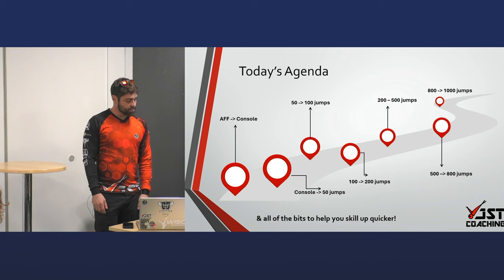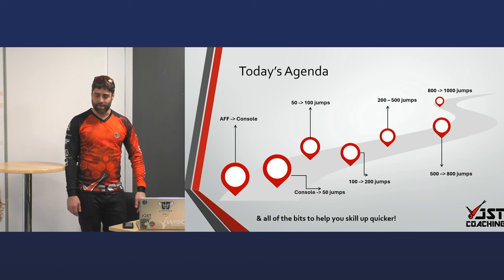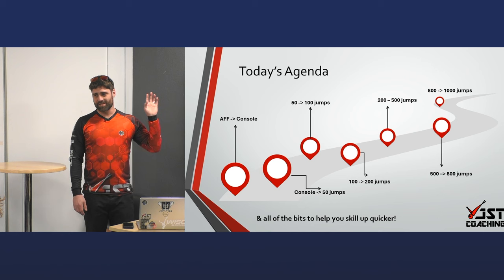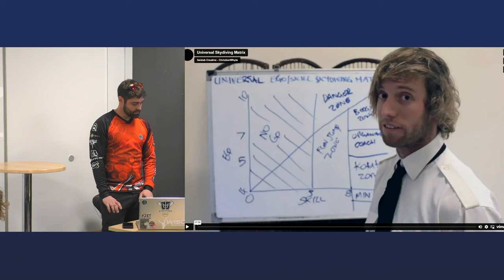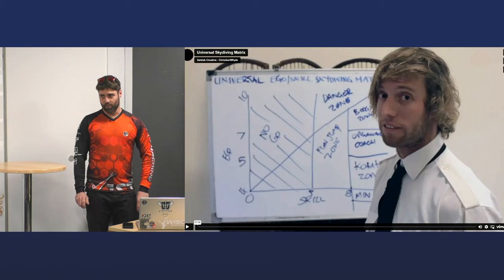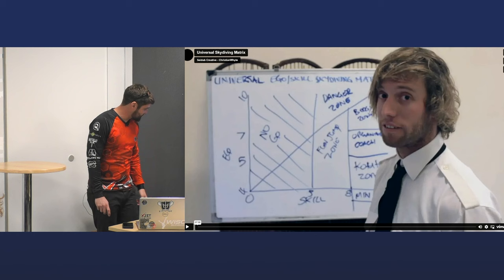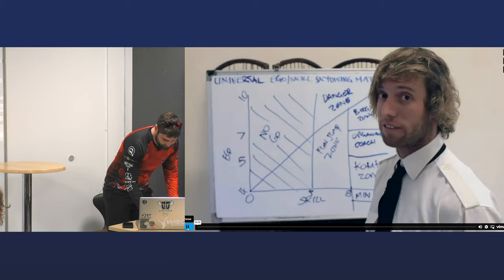Today, this is how we're going to go from AFF all the way through to about a thousand jumps. Once you've got a thousand jumps, you should be starting to take care of your own progression and life path. We're going to listen to Matt Munting for seven minutes — he did this about ten years ago and I still think it's very relevant — and then we'll continue on.